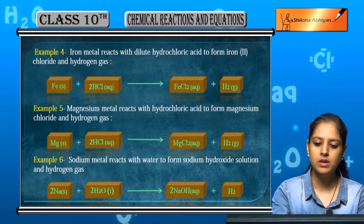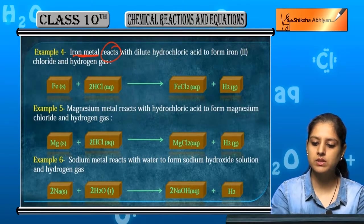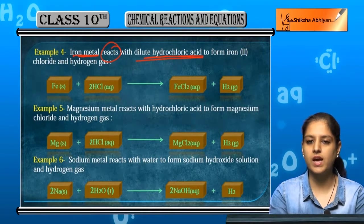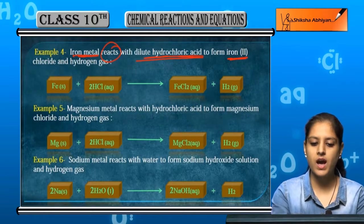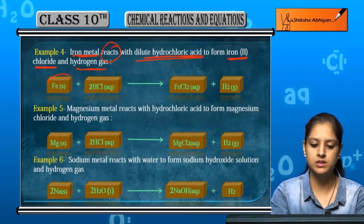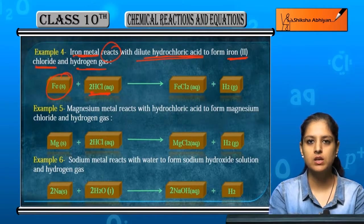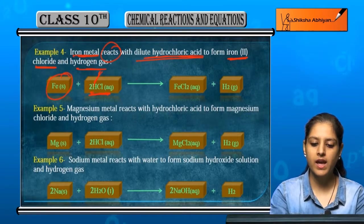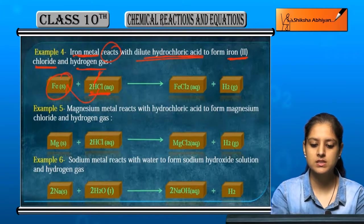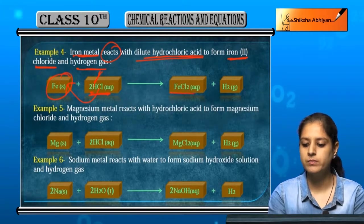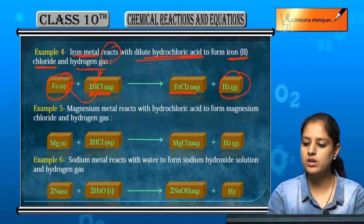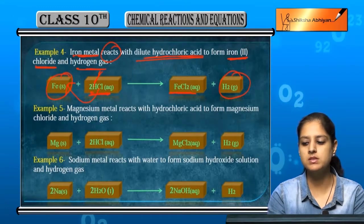Another example: iron metal reacts with dilute hydrochloric acid to form iron chloride and hydrogen gas. Fe plus 2HCl forms FeCl2 plus H2. Iron replaced hydrogen and combined with chlorine, and hydrogen gas is formed.